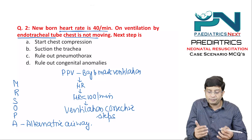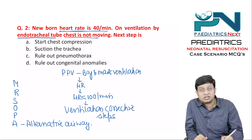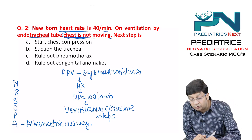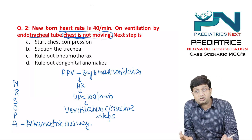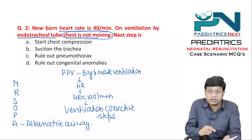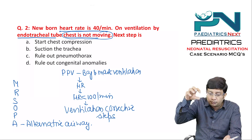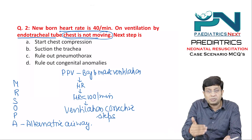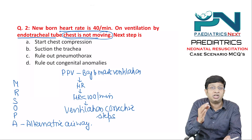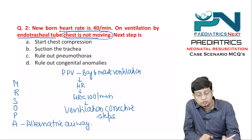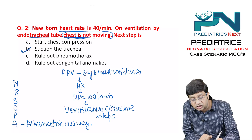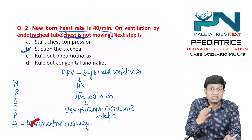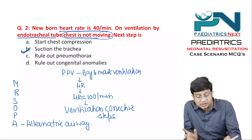The endotracheal tube has already been inserted, but the chest is not moving. Importantly, they are not saying the heart rate is not improving — they are saying the chest is not moving. If pressure is being applied through the endotracheal tube but air is not reaching, there may be secretions or obstruction in the tube. Therefore, suction of the trachea should be performed.